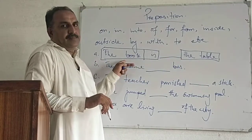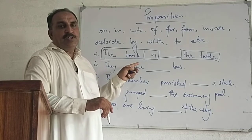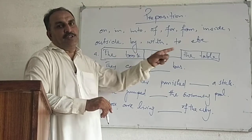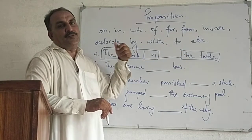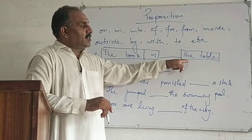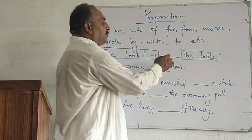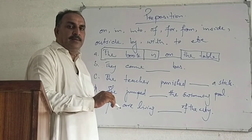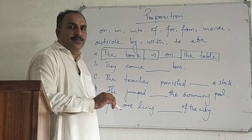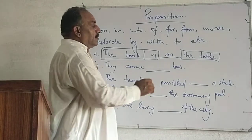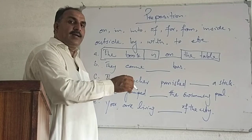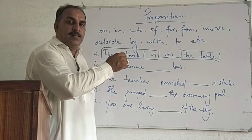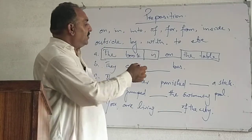A preposition determines the place of the subject. Preposition means prior to position — before the position. The table is the position. What comes before it? On the table, under the table, beneath the table, below the table, above the table, over the table. These prepositions — on, in, under, beneath, below, above — show the position of the book. Where is it?